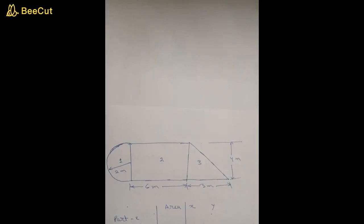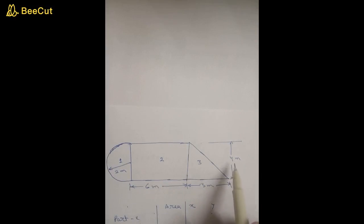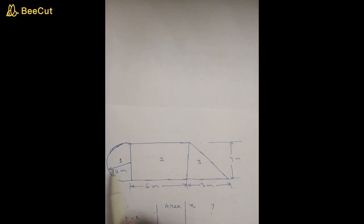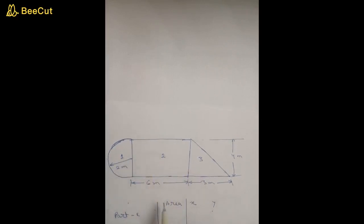In this video we will see how to calculate the centroid of a composite shape. The shape is made of a semicircle, a rectangle, and a triangle. Dimensions are given in meters: height is 4 meters, this is 3 meters, this is 6 meters, and the radius of the semicircle is 2 meters. For simplicity, we have divided these parts into part 1, part 2, and part 3.